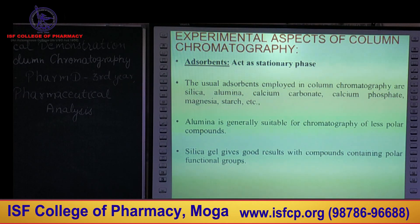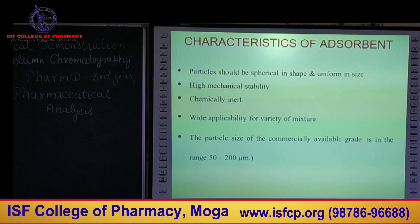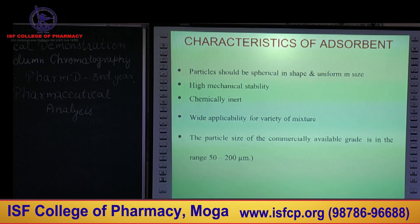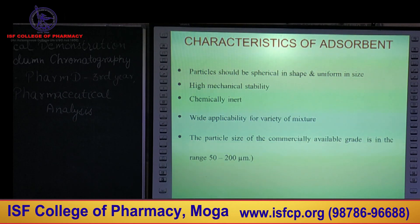Alumina is suitable for chromatography of less polar compounds while silica is used for polar functional groups. The basic requirements for the adsorbent are: the particle size should be spherical and uniform in shape. It should have high mechanical stability and be chemically inert. The particle size for commercially available grade adsorbents is 50 to 200 micrometres.